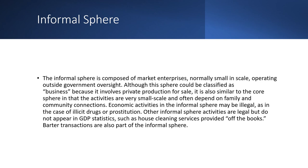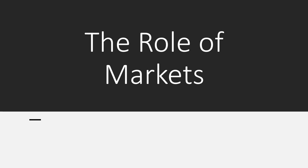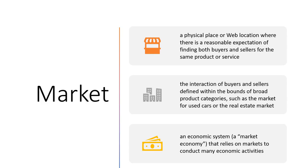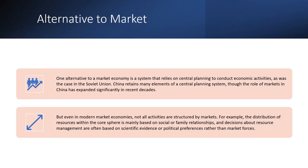Let us now look at the role of markets. A market is a physical place or web location where there is a reasonable expectation of finding both buyers and sellers for the same product or service — the interaction of buyers and sellers defined within the bounds of broad product categories such as the market for used cars or the real estate market. A market economy relies on markets to conduct many economic activities. One alternative is a system that relies on central planning, as was the case in the Soviet Union; China retains many elements of a central planning system, though the role of markets there has expanded significantly in recent decades.